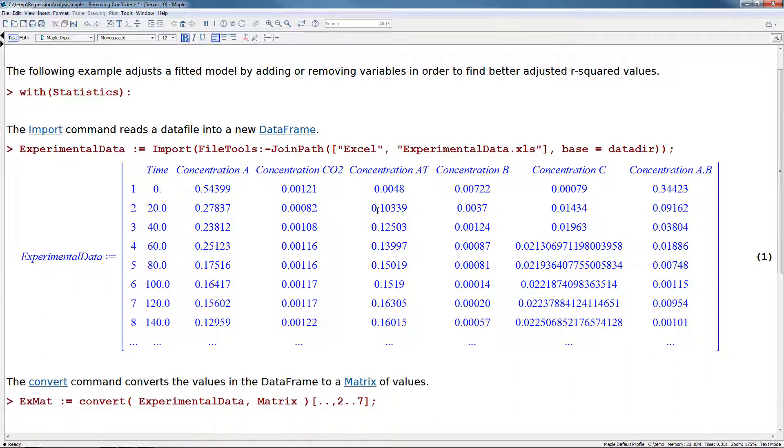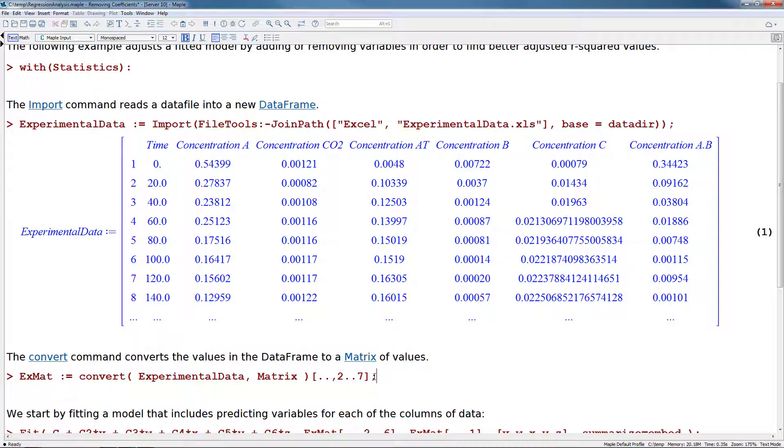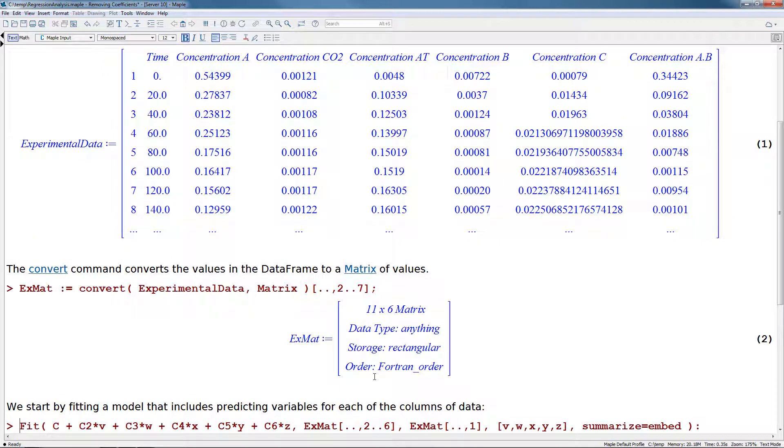Now we're actually only interested in these six columns here. So we don't need this time column. So let's just convert this to a matrix that stores just those six columns using the convert command.